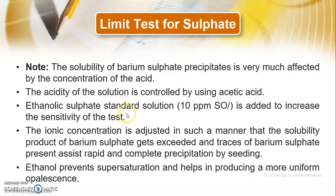The ethanolic sulphate standard solution is used to increase the sensitivity of the test. The ionic concentration is adjusted so that the solubility product of barium sulphate gets exceeded, and traces of barium sulphate present assist rapid and complete precipitation by seeding. If the solubility product is not exceeded, complete precipitation is not observed. Ethanol prevents supersaturation and helps produce a more uniform population, which is why ethanolic standard sulphate solution is generally used.